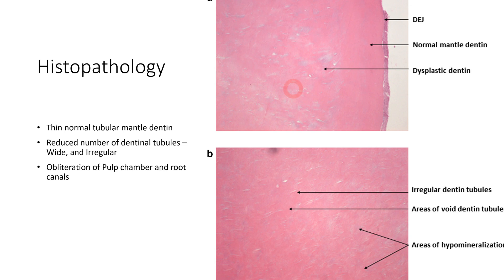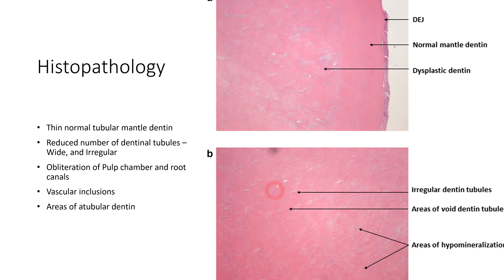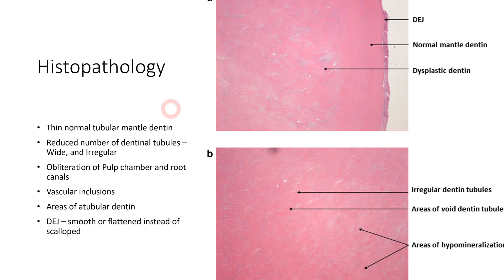Pulp chamber and root canal — either one or both — can be obliterated. There can also be vascular inclusions, seen as certain red dots representing vessels. Some areas show atubular dentine. The dentino-enamel junction, which is normally scalloped, is smooth or flattened, which is why enamel wears off easily since dentine does not provide proper support. Histological features include dysplastic dentine, irregular dentinal tubules, areas of void dentinal tubules, and areas of hypermineralization.